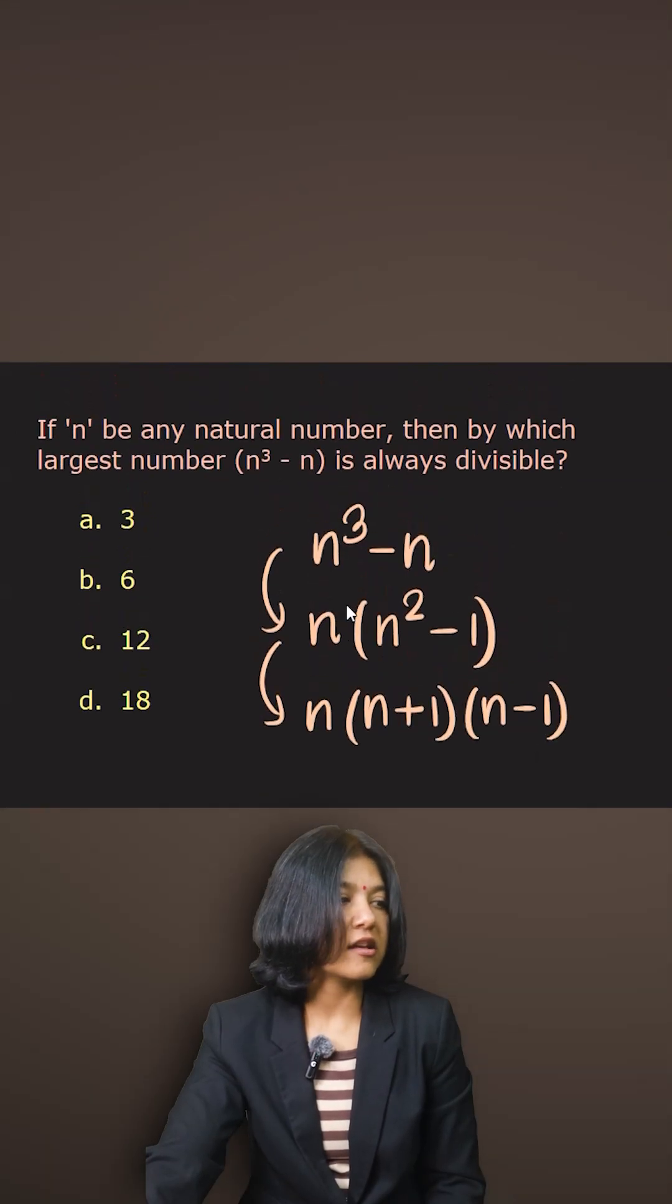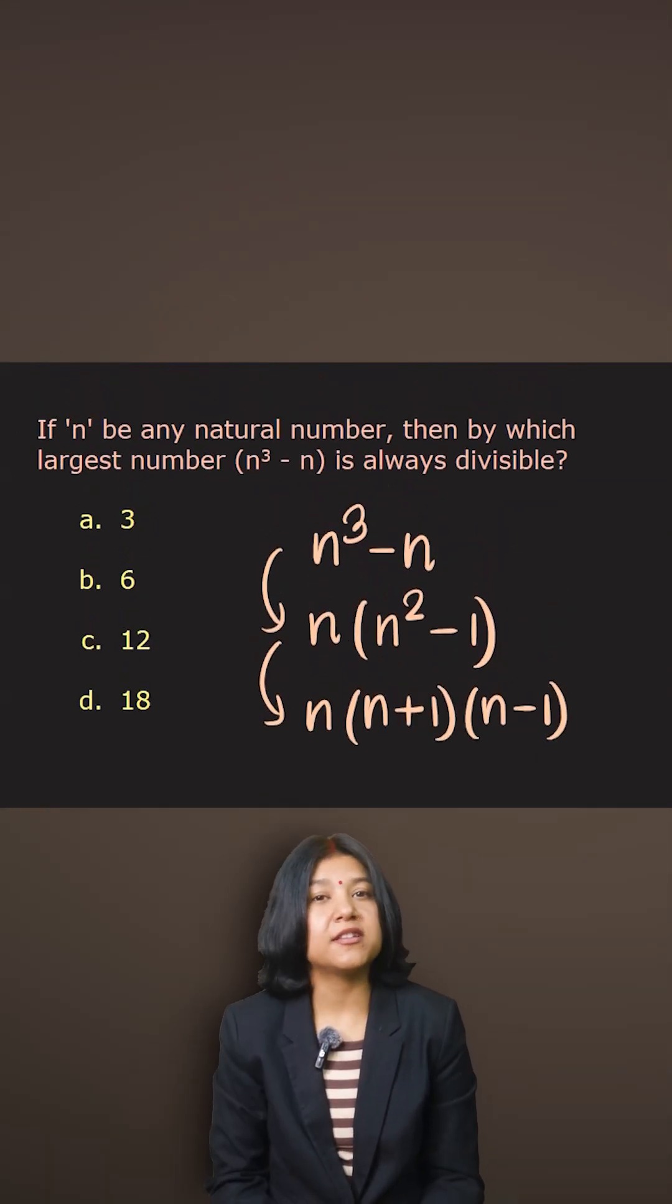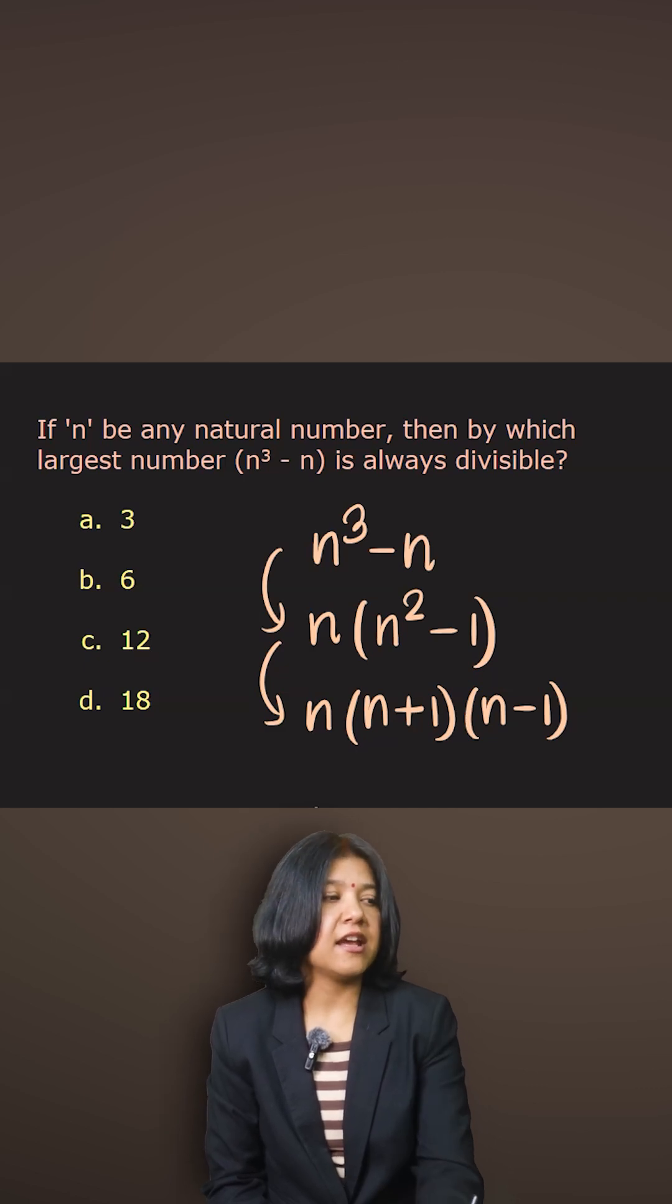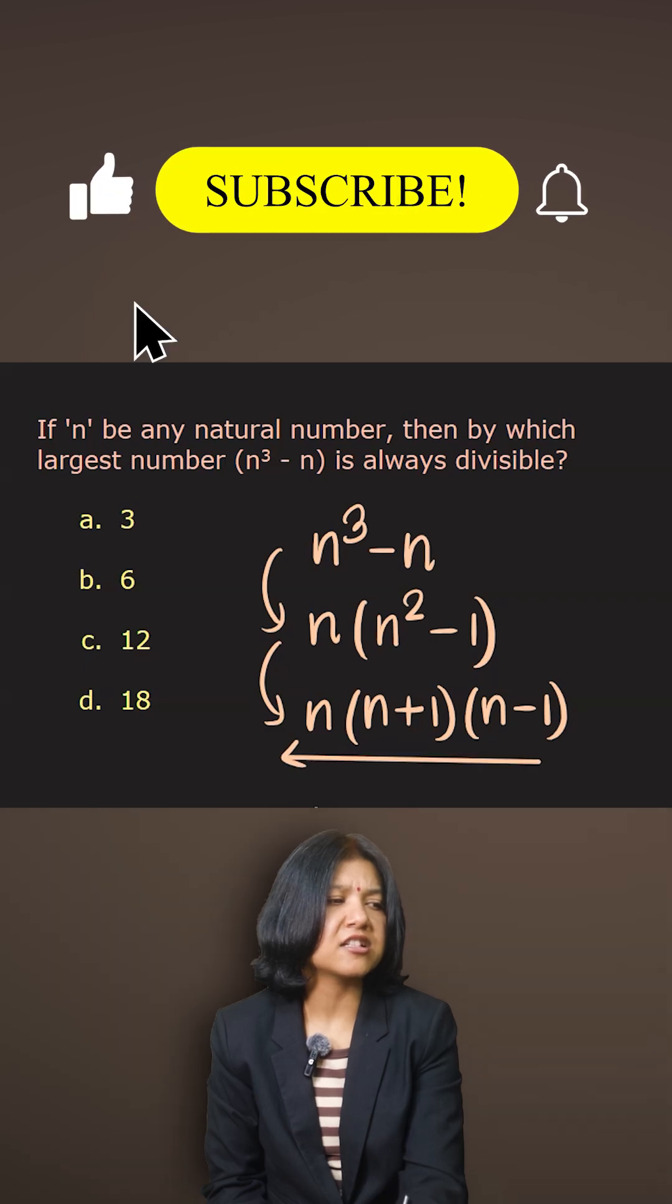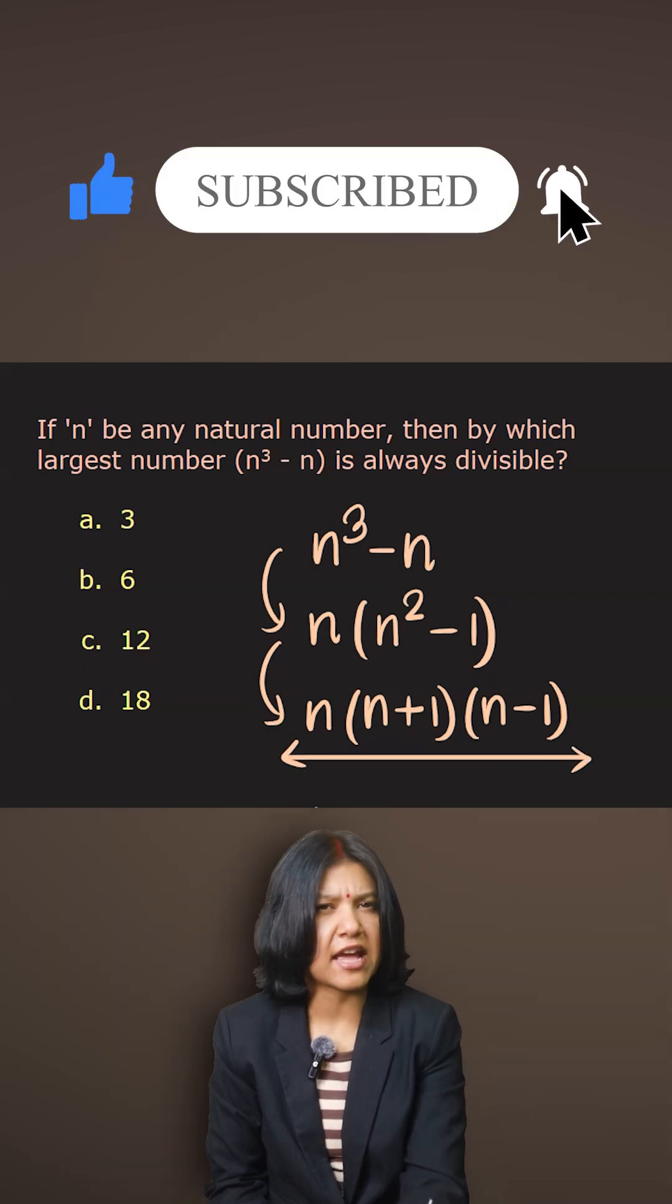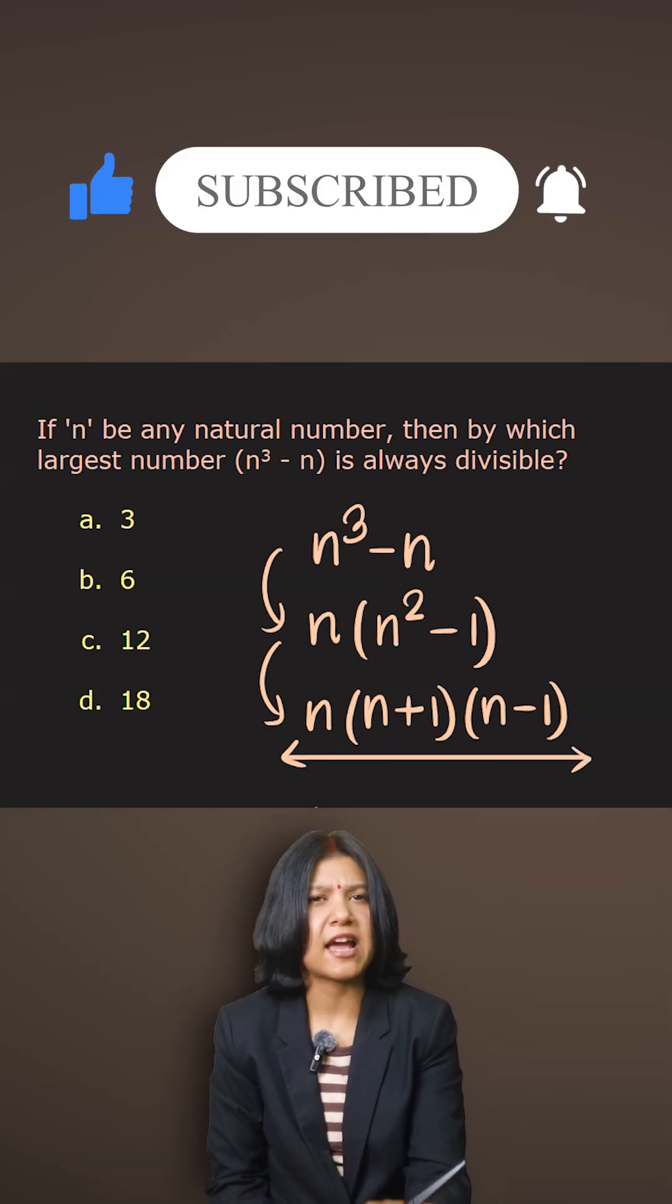If n is a natural number, then n can be both odd or even. The best part is n, n + 1, n - 1 represent nothing but three consecutive numbers. n - 1 is the smallest while n + 1 is the biggest.